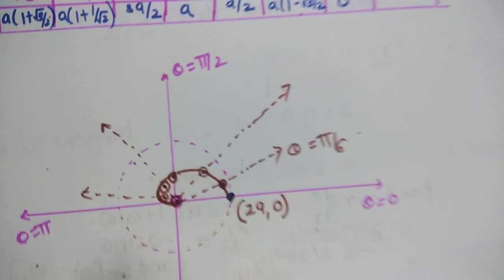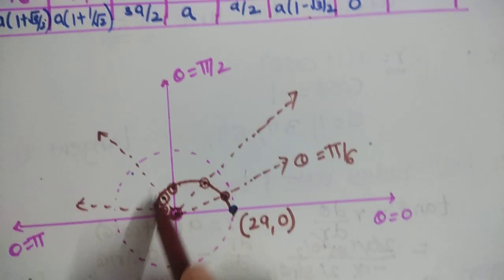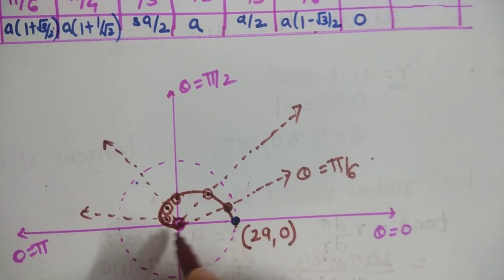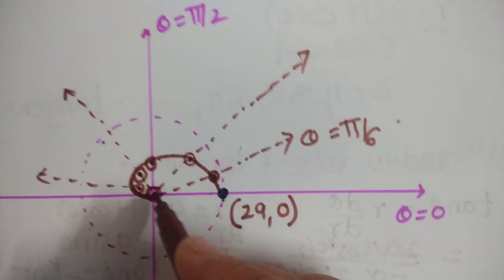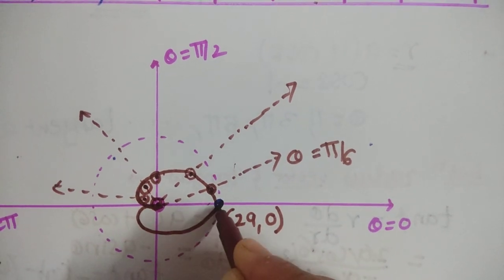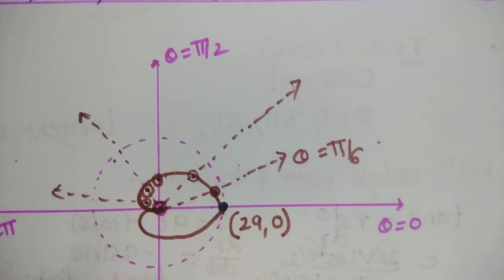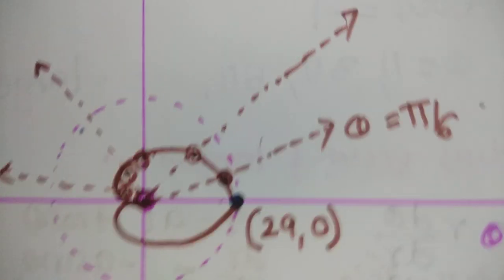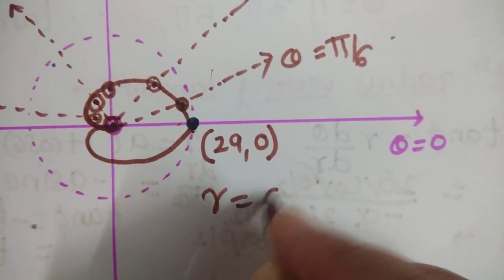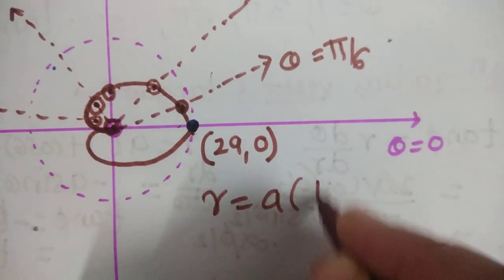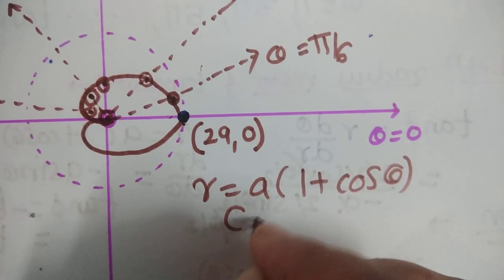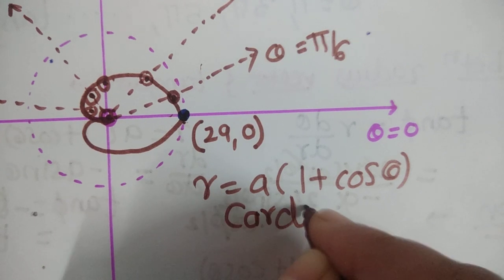The curve is symmetric about the initial line θ = 0, so whatever the curve is on the upper side, the same curve appears on the lower side. The shape of this curve is heart-shaped, and r = a(1 + cos θ) is called a cardioid.